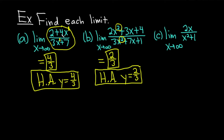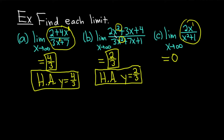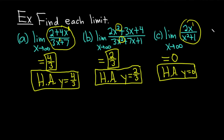In the first two examples the degrees matched, so the answer is the ratio of the leading coefficients. In part c, we have the limit as x approaches infinity of 2x / (x² + 1). Here the numerator has degree 1 and the denominator has degree 2. As x gets really big, the denominator grows much faster than the numerator, so this fraction approaches 0. Whenever the degree is bigger on the bottom, the answer is always 0. Whenever they're the same, it's the ratio of leading coefficients. The HA here is y equals 0.